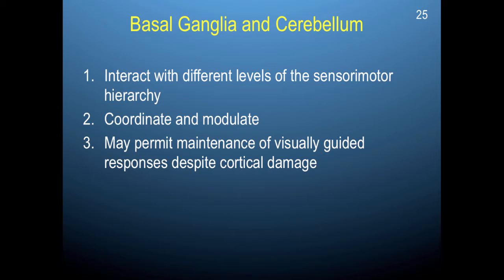The basal ganglia and the cerebellum interact with different levels of this sensory-motor hierarchy. What they primarily do is coordinate and modulate. The cerebellum is involved in coordinating, and the basal ganglia is involved in modulating. They also permit the maintenance of visually guided responses despite cortical damage, so even if you have some damage to motor areas, you can still engage in visually guided motor movements via the basal ganglia, which is subcortical, and the cerebellum.